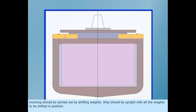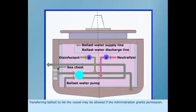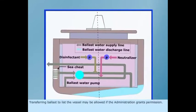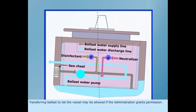Inclining should be carried out by shifting weights. Ship should be upright with all the weights to be shifted in position. Transferring ballast to list the vessel may be allowed if the administration grants permission.